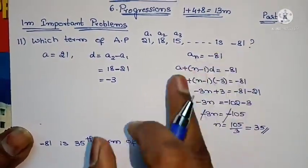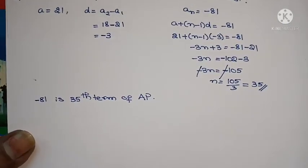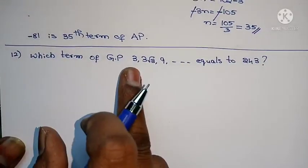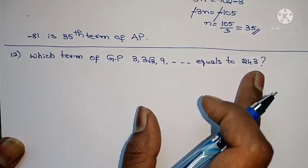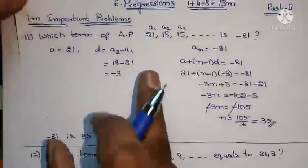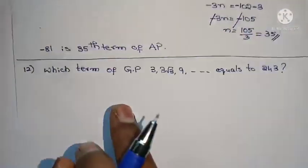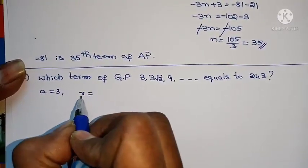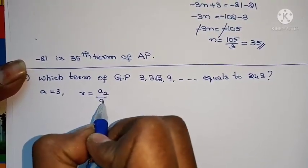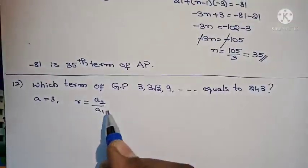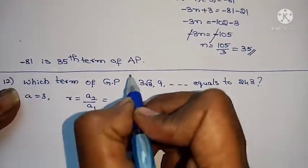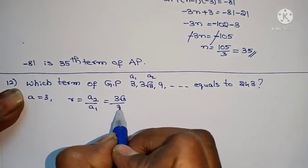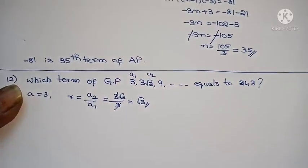Next GP problem. The first term a is common. For GP, the common ratio R is given by A2 by A1. For AP, d equals A2 minus A1; for GP, R equals A2 by A1. So A2 by A1 equals 3√3 by 3. Cancelling 3, R equals √3.